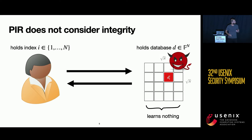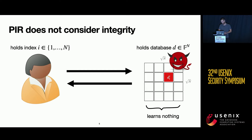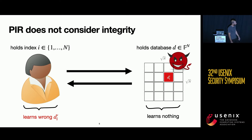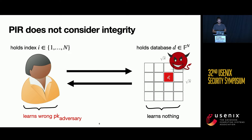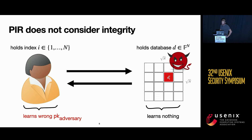The problem with classic PIR is that it doesn't consider integrity. If the server tampers with the entry that Alice wants to retrieve, Alice would retrieve the wrong entry. Following our example of the PGP key server, this means that an adversary could force Alice to retrieve a wrong public key, for example to mount a man-in-the-middle attack.